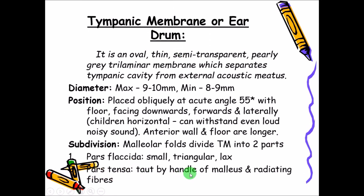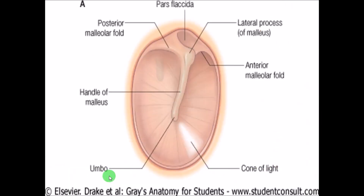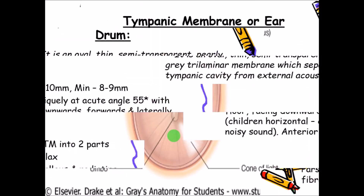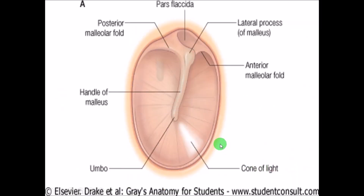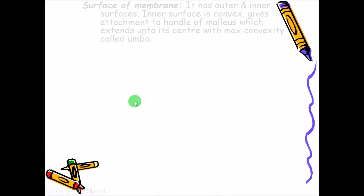Pars tensa is supported by the handle of the malleus and radiating fibers. The handle of the malleus pulls and tenses this whole part of the tympanic membrane — that is what is called the pars tensa. The radiating fibers, as you can see here, make it much more tense.